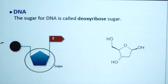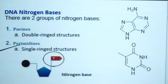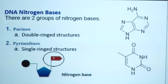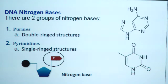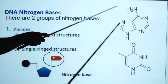The sugar for DNA is called deoxyribose sugar. Regarding DNA nitrogenous bases, there are two groups: first, purine nitrogenous bases, and second, pyrimidine nitrogenous bases. In case of purines, we have a double ring structure; in case of pyrimidines, we have a single ring structure.